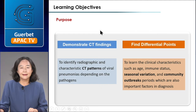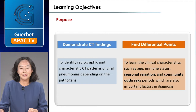The purpose of this lecture is focused on the radiographic and CT patterns of viral pneumonia caused by different pathogens, including new pathogens. Clinical characteristics that could affect imaging — such as patient age and immune status, seasonal variation, and community outbreaks — and pathogenesis are also discussed.